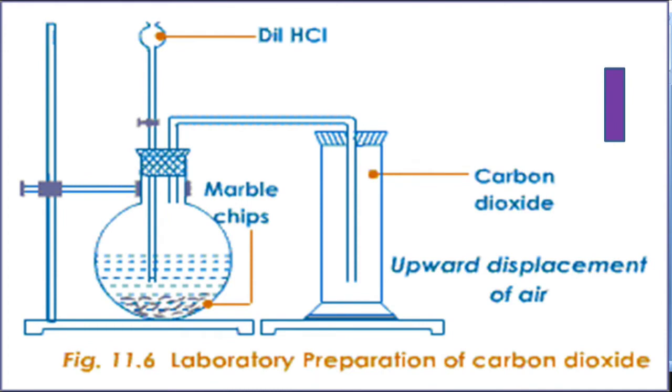The obtained carbon dioxide gas is collected by upward displacement of air because it is heavier than air. An apparatus and chemicals required for this is shown in the diagram.